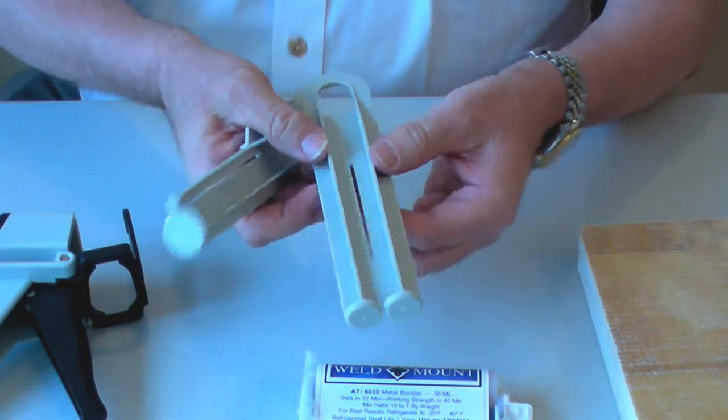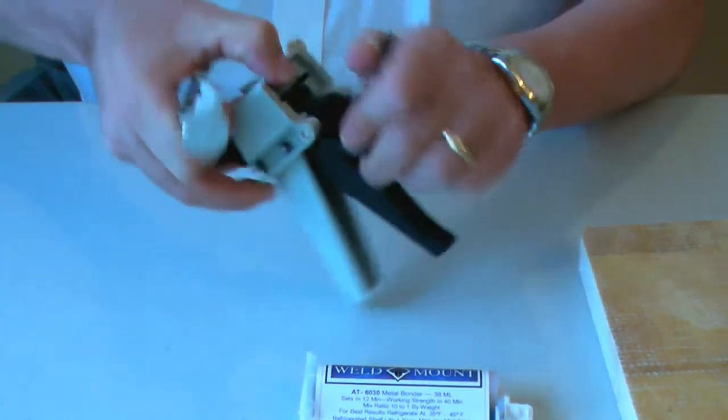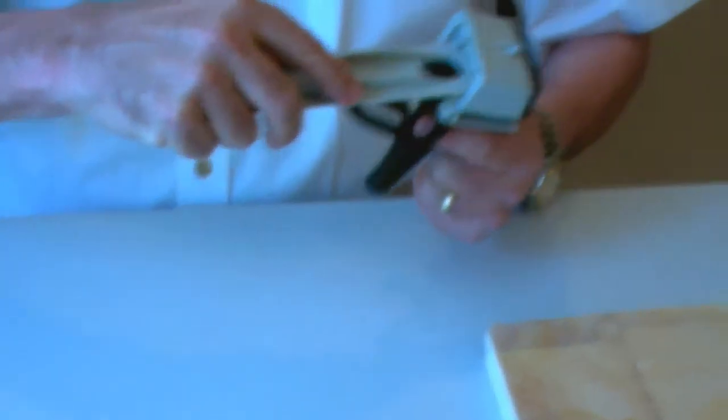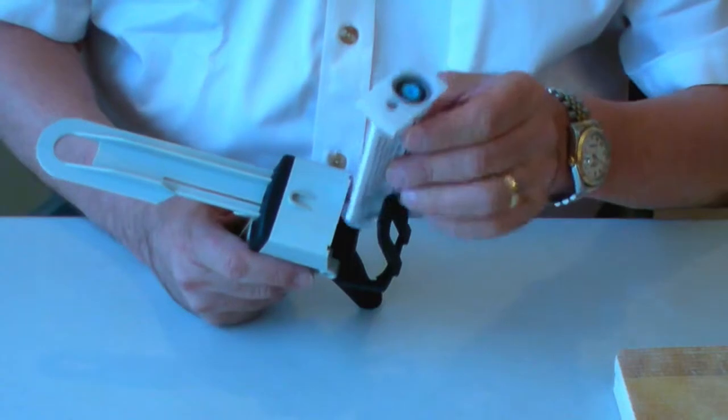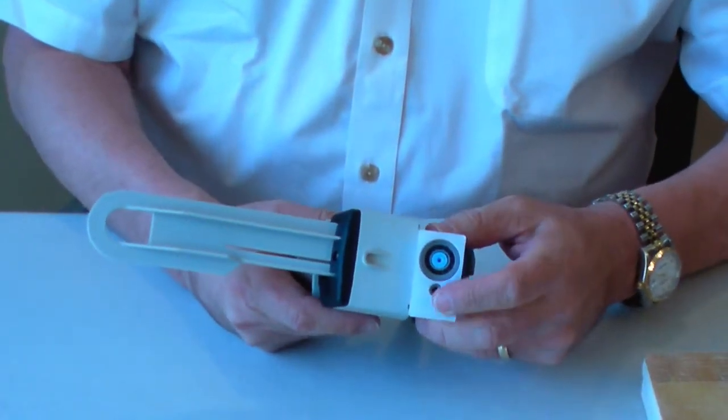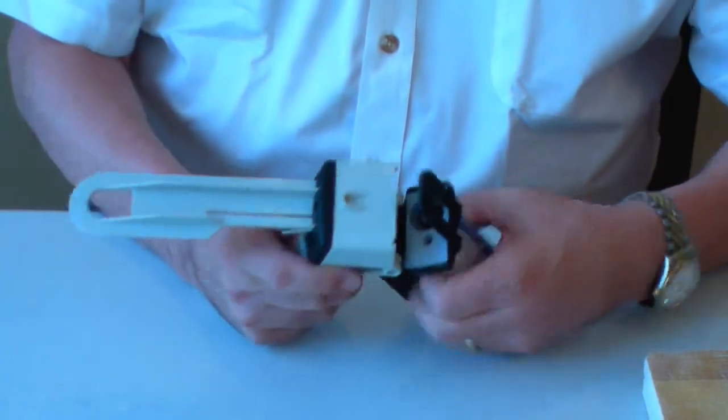So rather than using the 1 to 1 plunger, we now use the same gun but we apply a 10 to 1 plunger to the gun before we can use this adhesive. Load the cartridge into the gun just like our normal adhesives but make sure the 10 and the 1 side are lined up properly with the plunger.